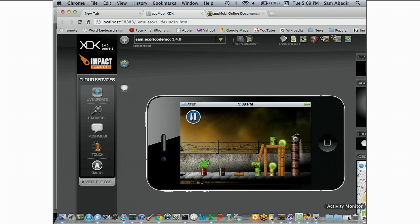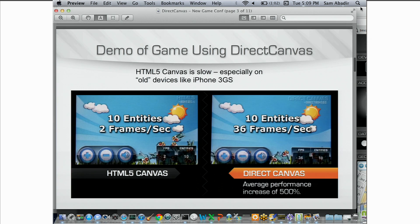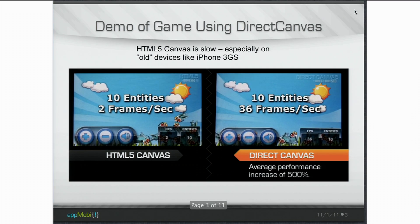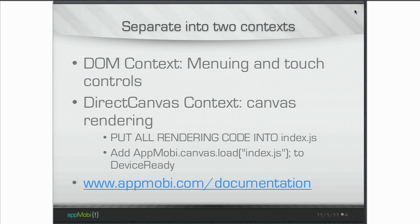So if anybody wants to see it on an iPhone using direct canvas after this, come grab me. To use direct canvas, we're basically proposing a slightly different way of thinking about how you would architect a game in a browser. The first is to separate the stuff browsers do well — menuing, general page layout — into one context, which is the DOM. The other one is called the game layer or the direct canvas context, where all game rendering and gameplay is. To do that, you basically just take your JavaScript files, all dependencies on game logic, and put them into index.js and sub-trees from there.